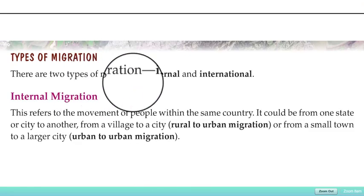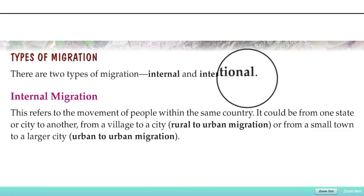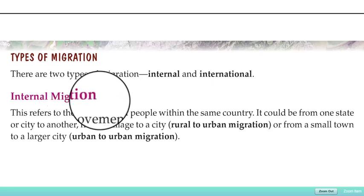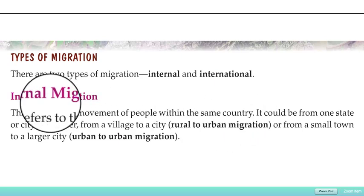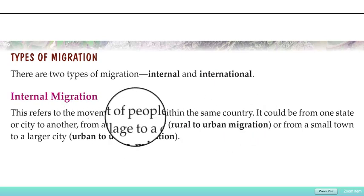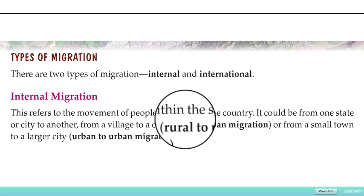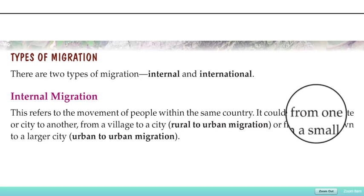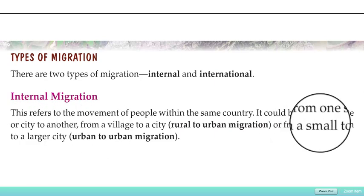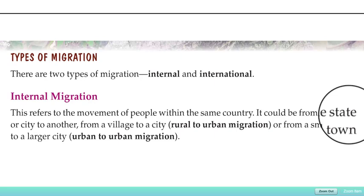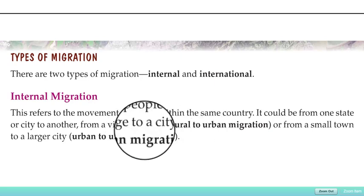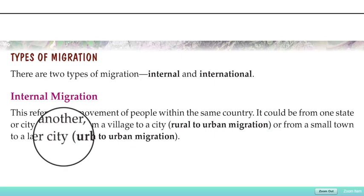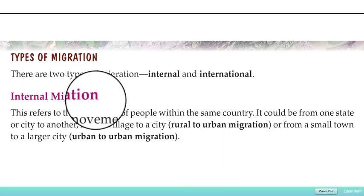There are two types of migration: internal migration and international migration. Internal migration refers to the movement of people within the same country. It could be from one state or city to another, from a village to a city, from a city to a village, or from a small town to a large city. All these kinds of movements fall under internal migration.